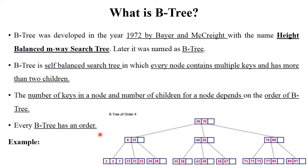Every B-tree has a given order. See here — this is an example of a B-tree where the order is 4. It means you can store a minimum of one to a maximum of three values in one node. See here, this node contains two values, this node contains three values. All the values are stored in ascending order or sequential form. This is the structure of B-tree.